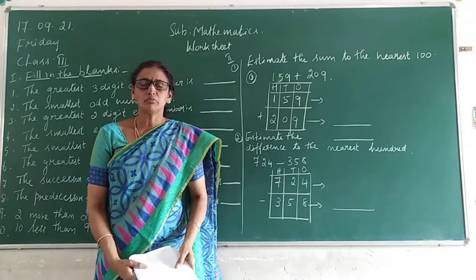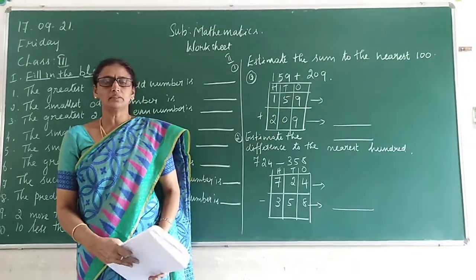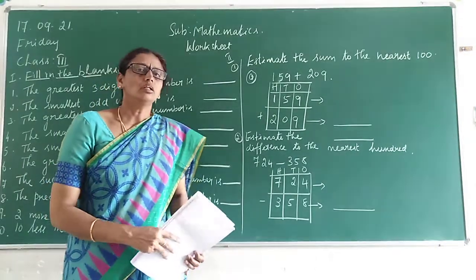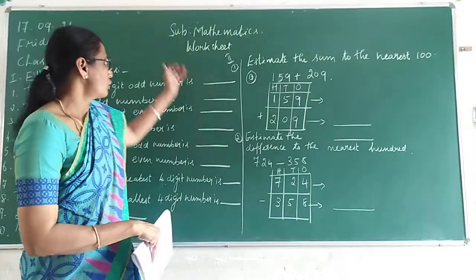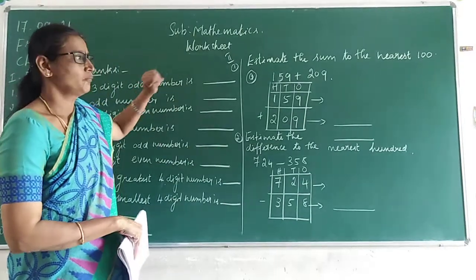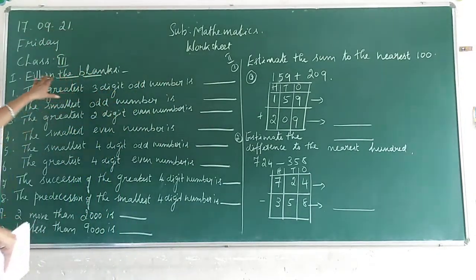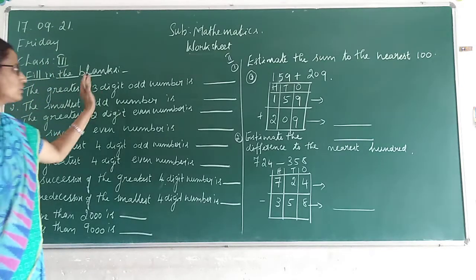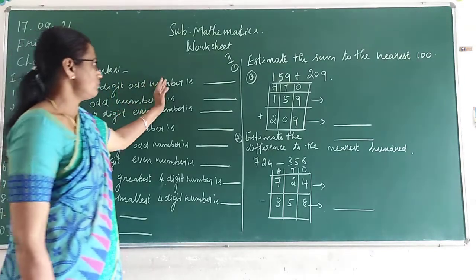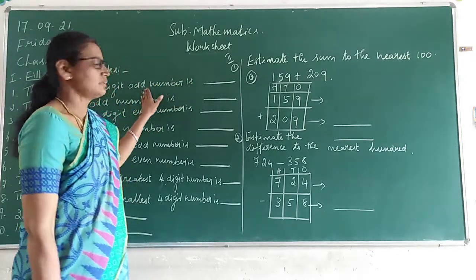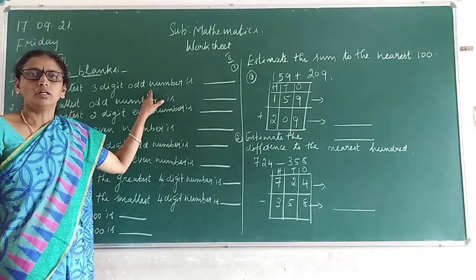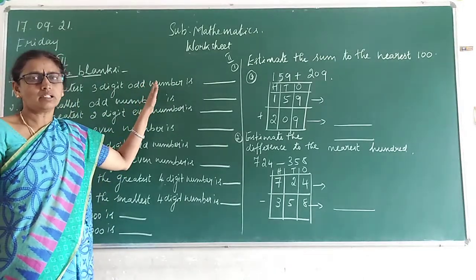Good morning students. We are going to class. Our subject is Mathematics. Children, today we will learn the worksheet. Children, first grade is in the class. The greatest 3-digit odd number is dash. What is the greatest 3-digit odd number, children?